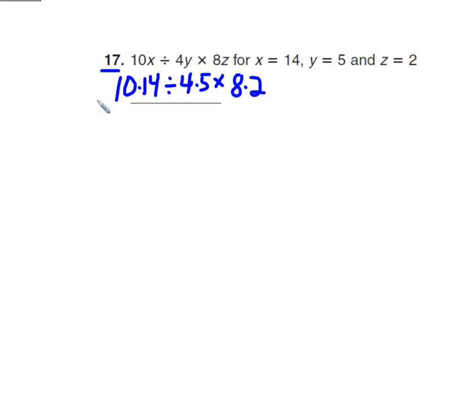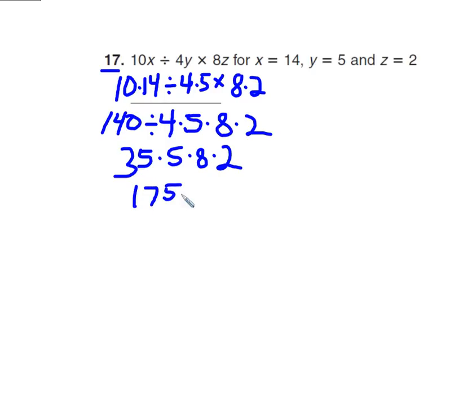And now this is all multiplication and division, so I just move left to right. So 10 times 14 is 140, divided by 4 times 5 times 8 times 2. Now I'm just moving on left to right. 140 divided by 4 is 35. So I know 140 divided by 2 is 70, so it's going to be half of 70: 35. 35 times 5 times 8 times 2. So let's go ahead here. 35 times 5 is 175 times 8 times 2.